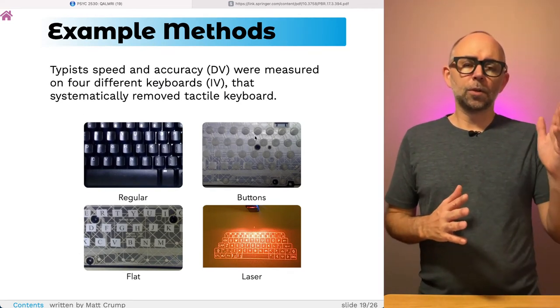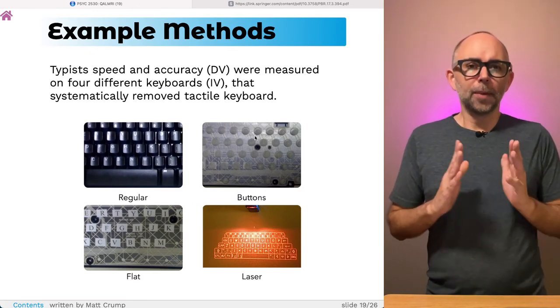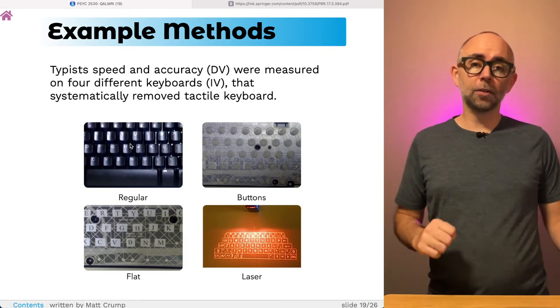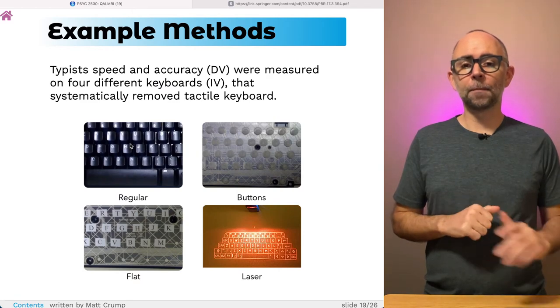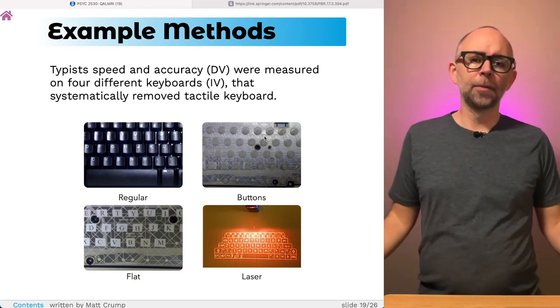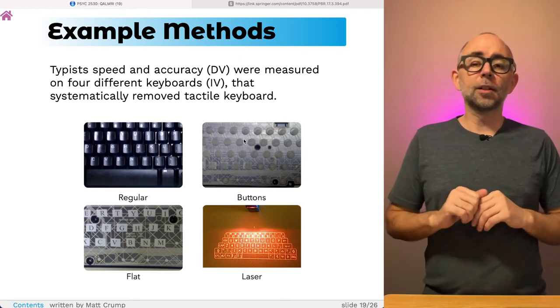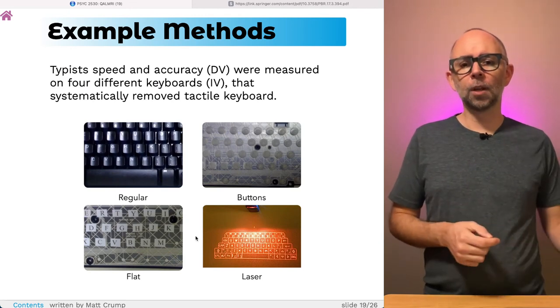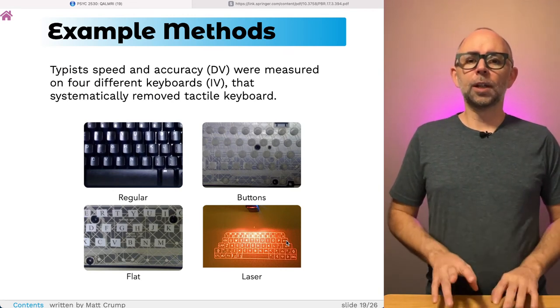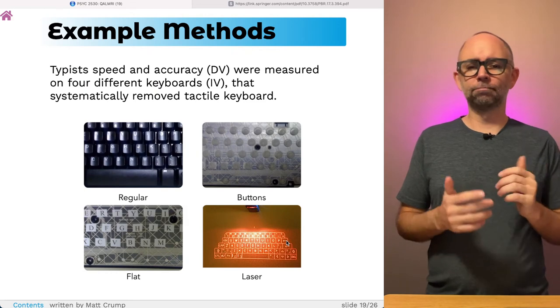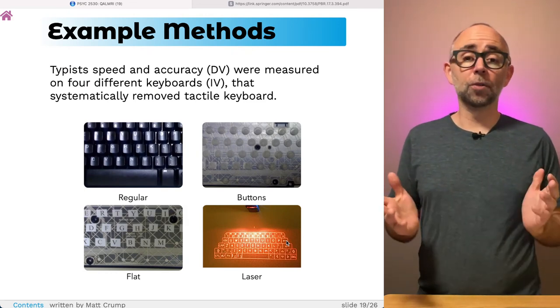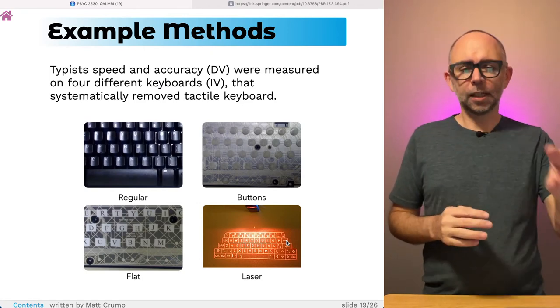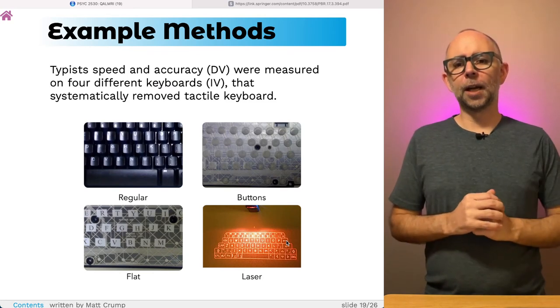As an example, if you were to read the methods of my paper, you would see the major manipulation involved typing on different keyboards. Typists could have typed on a regular keyboard like this one with these normal buttons you might be used to on a PC. If you take a keyboard apart, you could have people type on the little rubber buttons underneath the keys. You could also take this layer off and have people type on the circuit board, that's a flat surface. We also got access to a laser projection keyboard so that people could type on a table. And we did this before iPads were out. The point of these methods are to manipulate, systematically, the kind of tactile feedback that typists would receive from the keyboard. The question was, would this influence typing performance?